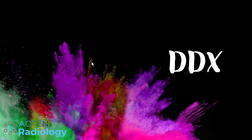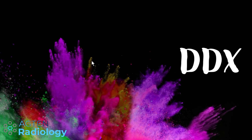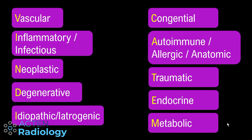Coming to a differential diagnosis for any unknown lesion, the broad categories can be remembered using a mnemonic. These categories should comprise most if not all differential diagnoses in any circumstance: vascular lesions, inflammatory lesions, tumors, degenerative changes, idiopathic, congenital, autoimmune or anatomic variants, traumatic, and endocrine and metabolic conditions.